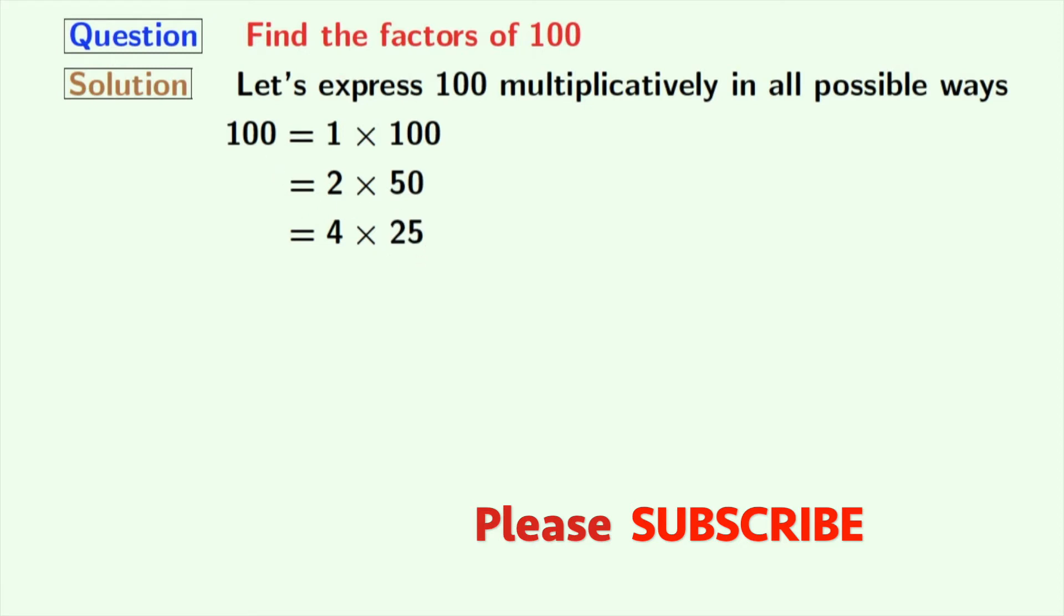Next number is 5 and we all know that 5 times 20 is equal to 100. The next 4 numbers, that is 6, 7, 8 and 9, do not divide 100. So, we will try for 10 and it is known to all that 10 times 10 is equal to 100.